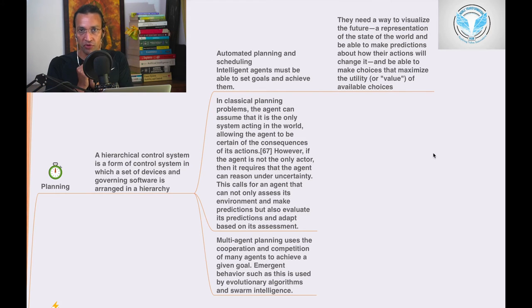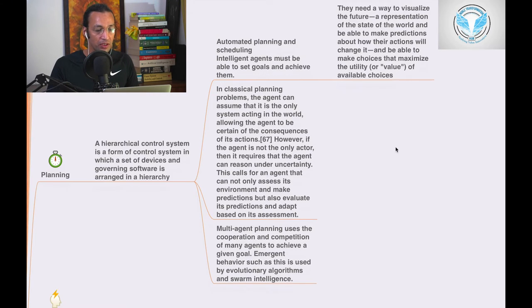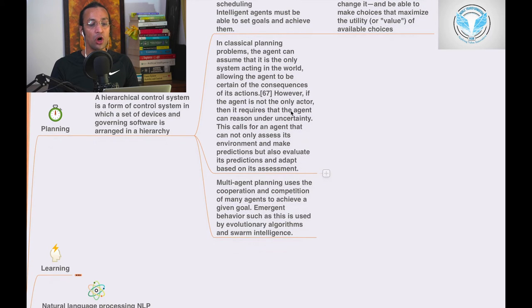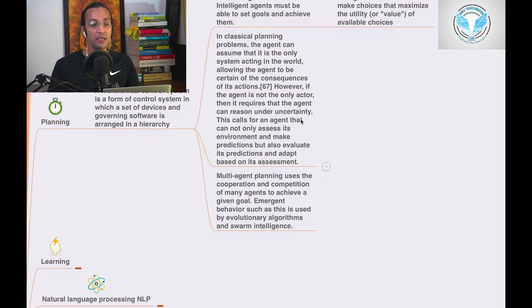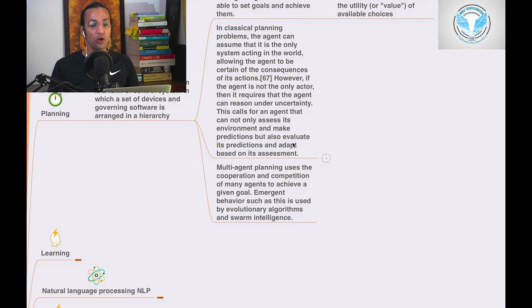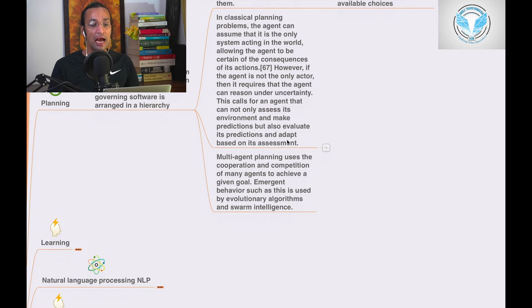In classical planning problems, the agent can assume that it is the only system acting in the world, allowing the agent to be certain of the consequences of its actions. However, if the agent is not the only actor, then it requires the agent to reason under uncertainty. This calls for an agent that cannot only assess its environment and make predictions, but also evaluate its predictions and adapt based on its assessment.